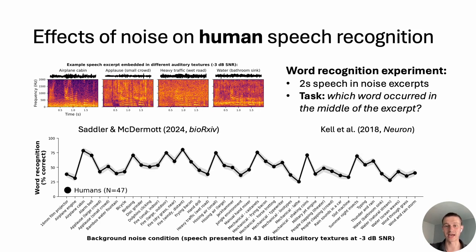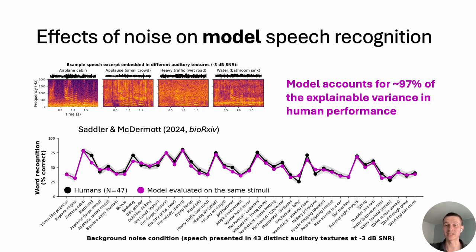Here's how well humans perform the task. This figure plots word recognition accuracy as a function of 43 different types of real-world noise — different auditory textures that people naturally encounter. Even though all noise conditions were presented at the same SNR, they produced a pretty wide range of performance, with some conditions being much harder for people than others. Here's how well our model does when tested on the same stimuli and task. It performs very similarly, accounting for about 97% of the explainable variance in human performance. Conditions that are harder for people are also harder for our model. Importantly, the model was never fit to the human data in any way. This similarity to humans simply emerges in a model optimized solely for performance on its ecological training task.